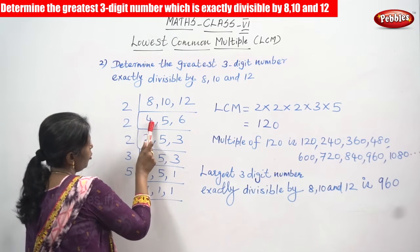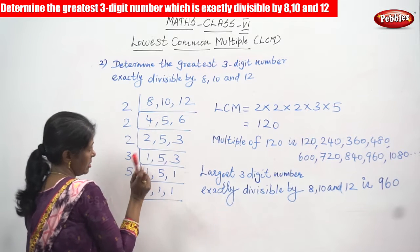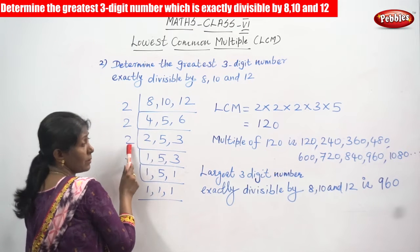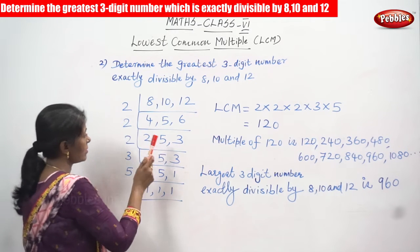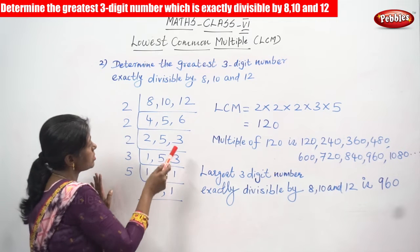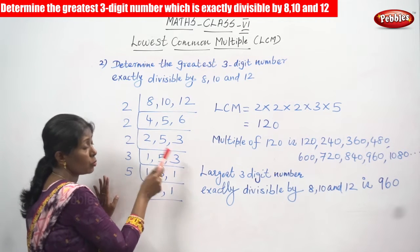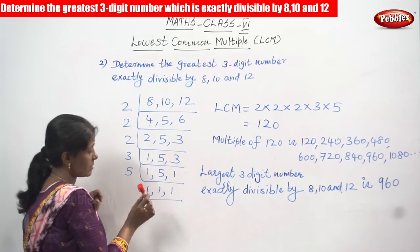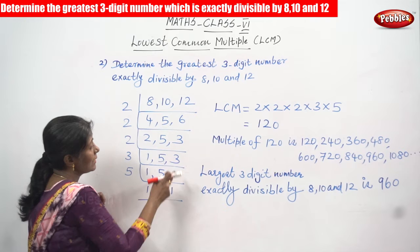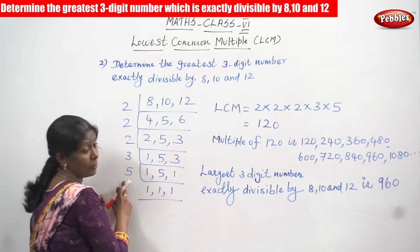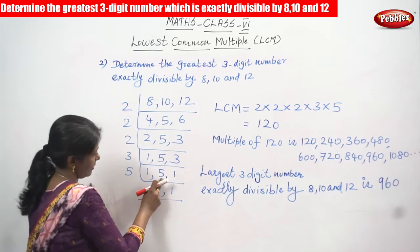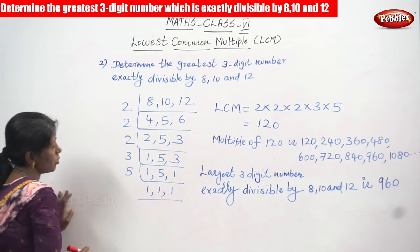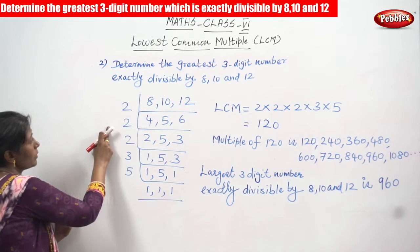Next, 4 and 6 are divided by 2. 4 divided by 2 gives 2, and 6 divided by 2 gives 3. Since 5 is not divisible by 2, we write 5 as it is. Then 2 divided by 2 gives 1. 5 is not divisible by 2, so we write 5 again. 3 is also not divisible by 2, so we write 3 again. Next we take 3: 1 stays as it is, 5 is not divisible by 3, and 3 divided by 3 gives 1. Then we take 5: 5 divided by 5 gives 1, and the remaining ones are written as they are.